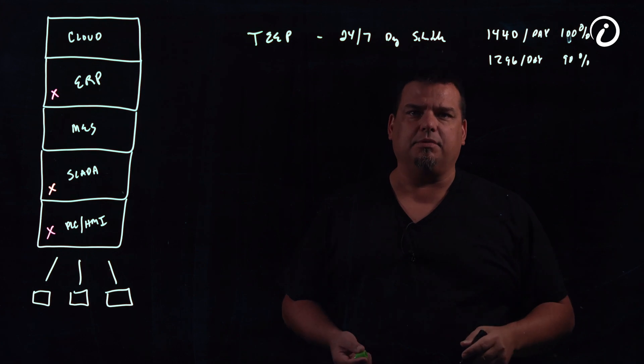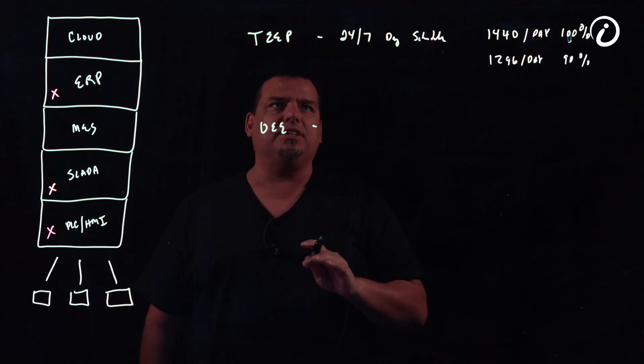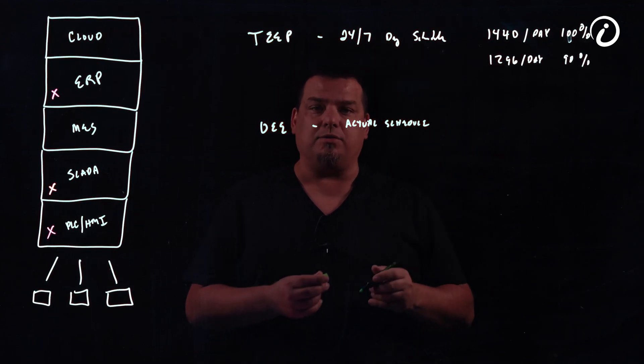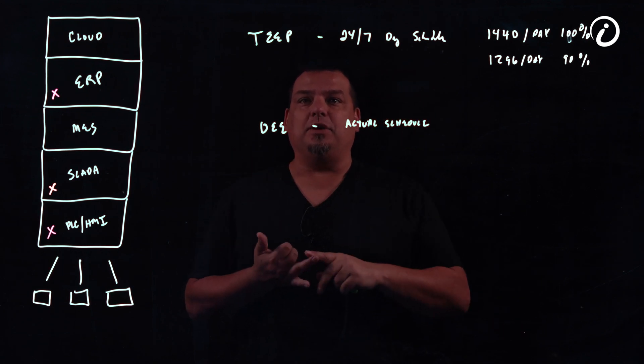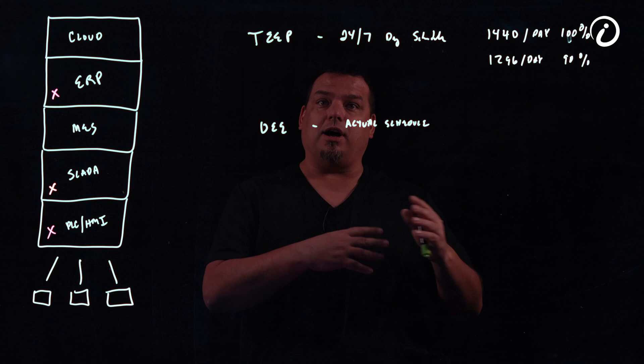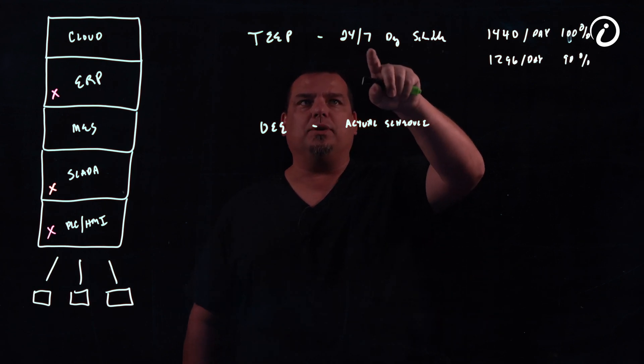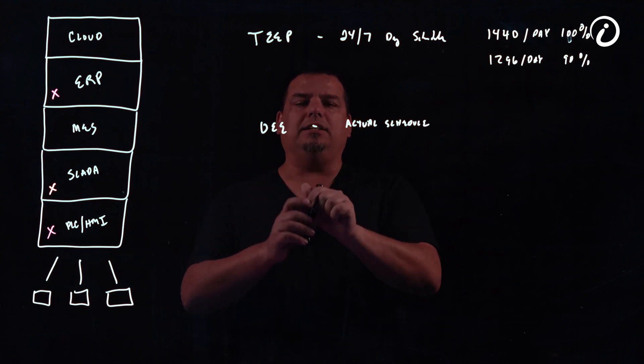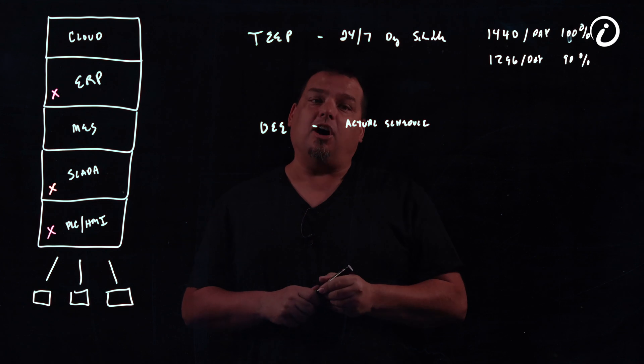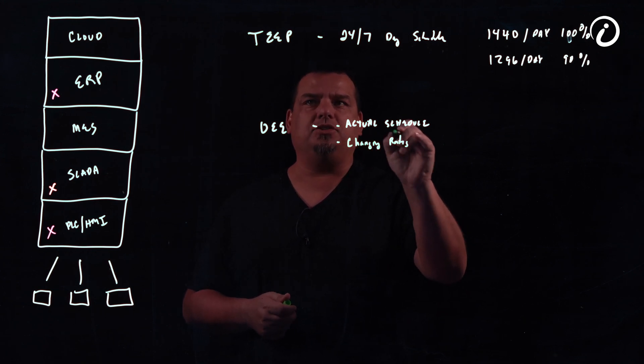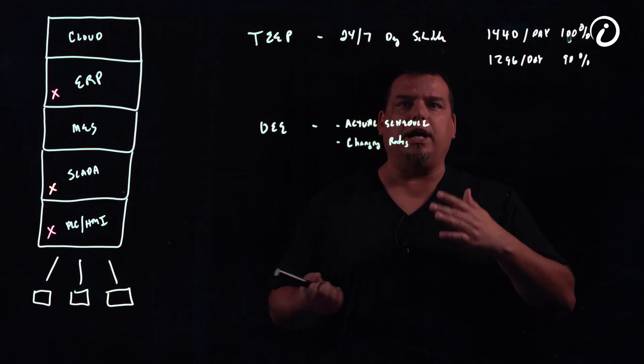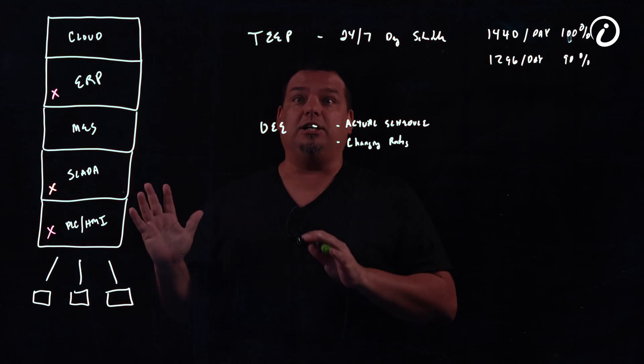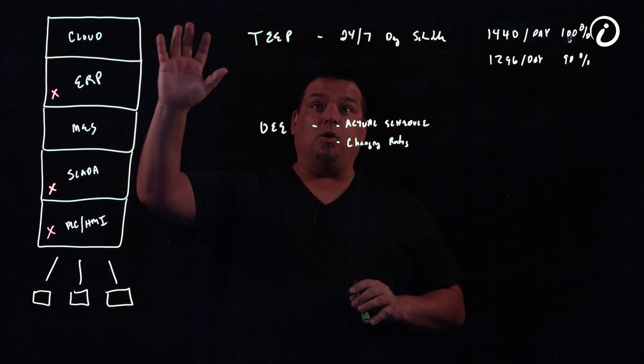OEE is overall equipment effectiveness and it takes into account your actual schedule. You don't operate 24 hours a day, seven days a week. You have safety meetings, you have shift change, you have changeovers from one product to another. When you're doing a changeover, you can't be producing one part per minute. What OEE does is it takes into account your actual schedule and it also takes into account changing rates. Your TEEP number is always based on the theoretical rate of a machine.